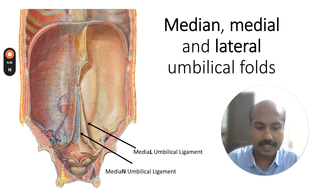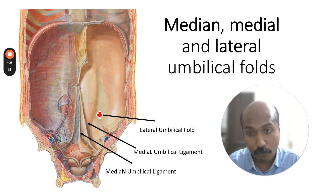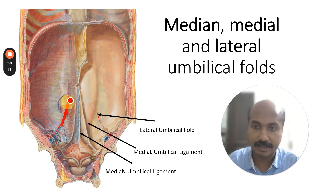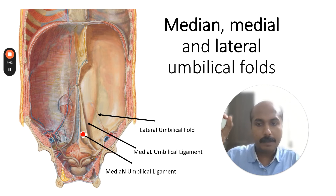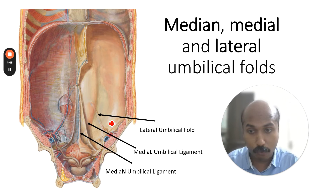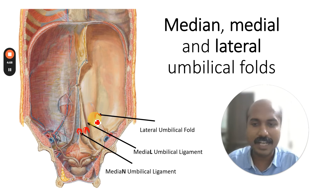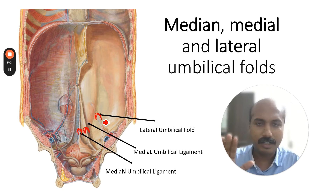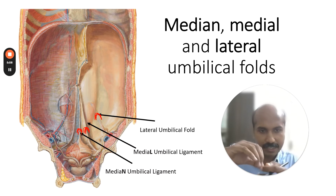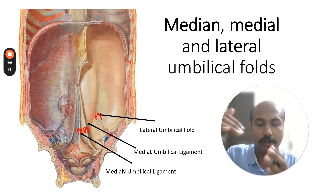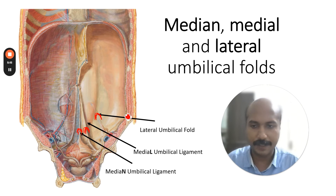Lateral to the medial umbilical ligament is the lateral umbilical fold, which is created not by any ligament or obliterated structure, but by the inferior epigastric arteries. The median umbilical ligament throws a fold called the median umbilical fold, the medial umbilical ligament creates the medial umbilical fold, and the inferior epigastric vessels create the lateral umbilical fold. All three are folds of the parietal peritoneum raised by the underlying structures.